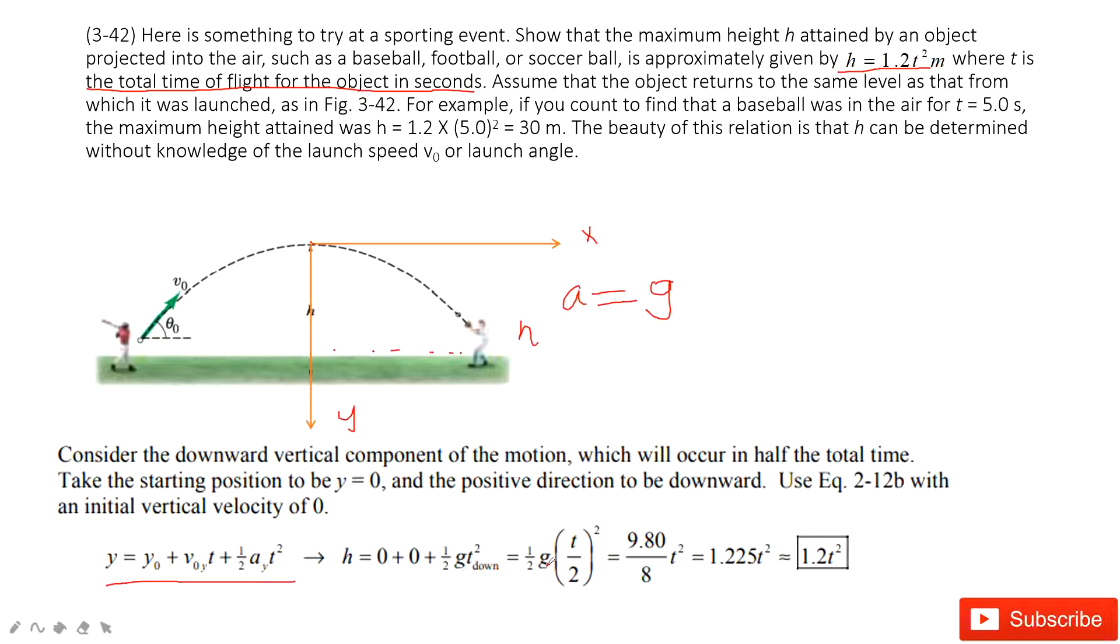So we can write it as one half g, and t divided by 2, then this term squared. And then we can get this is 9.8, and this is 4. So 2 times 4 is 8. So then we get the final answer.